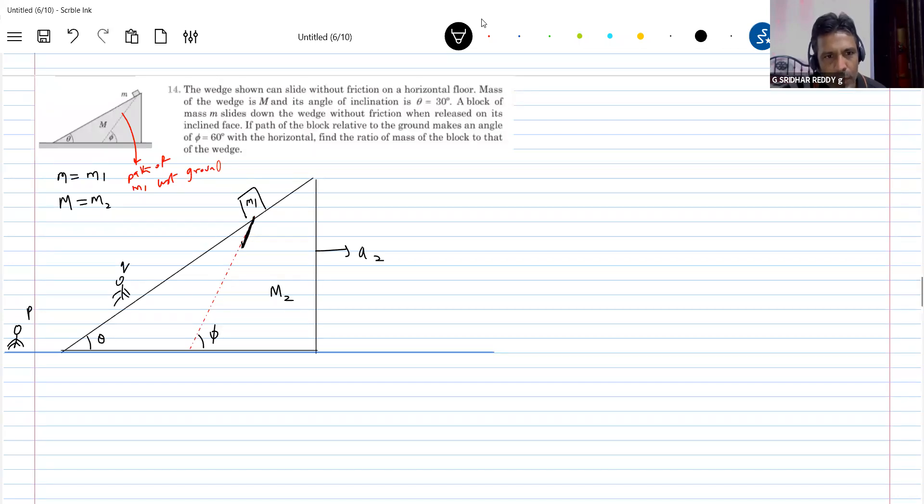I think that the only problem you have come across situation like this. Remaining all problems we never know the acceleration of block with respect to ground, the direction. But here, the direction is given, but we don't know even need to that much. Just he has given the path, the wedge will move horizontally, the block will move along the red color dotted line. Now he's asking ratio of M1 M2.